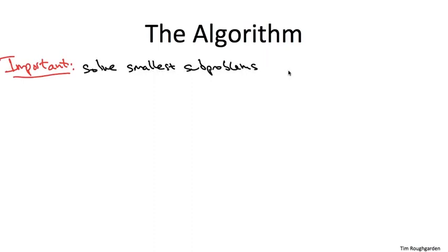How should we measure the size of a subproblem in the optimal binary search tree problem? The natural way to do it is the number of items in the subproblem. So if you're starting at I and you're going to J, the number of items in that subproblem is J minus I plus one. And that's going to be our measure of subproblem size.